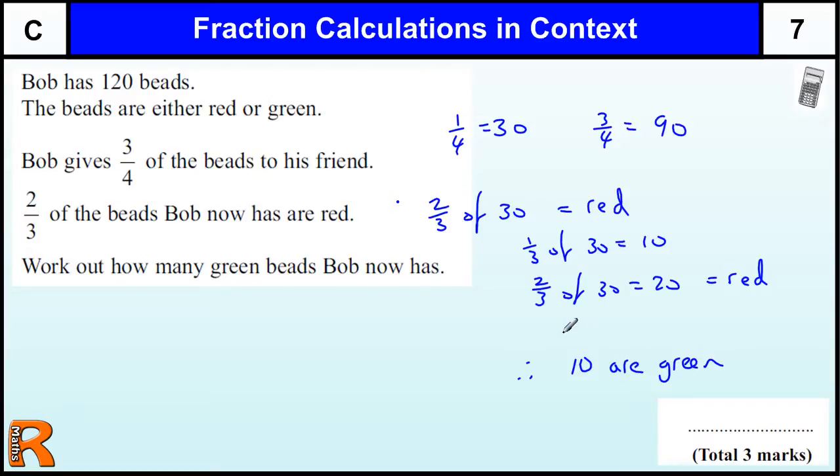We could do a little calculation there, 30 take away 20 equals 10, so 10 are green.